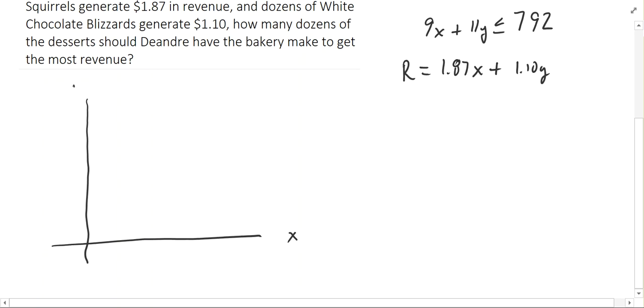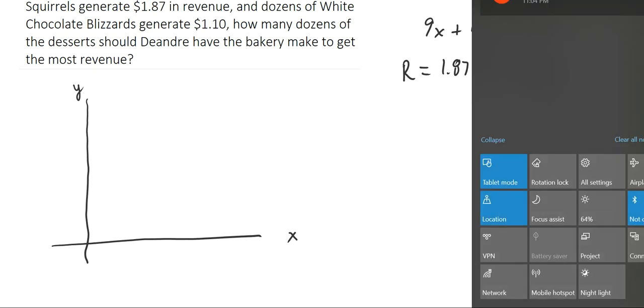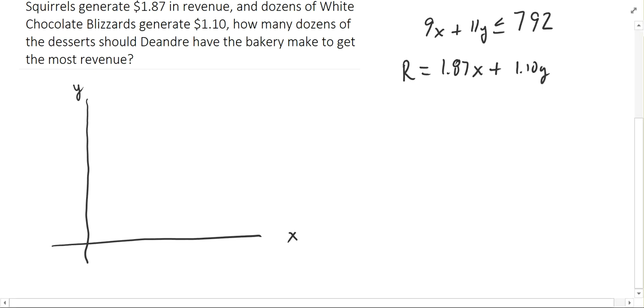X on the X axis, Y on the Y axis. Let's look at that first constraint: 9X plus 11Y equals 792. The easy way to graph that is to look at the intercepts. If X is 0, Y would be 792 divided by 11, and that's going to be about 70, 72. Yeah, so it's going to cross the Y axis at 72.